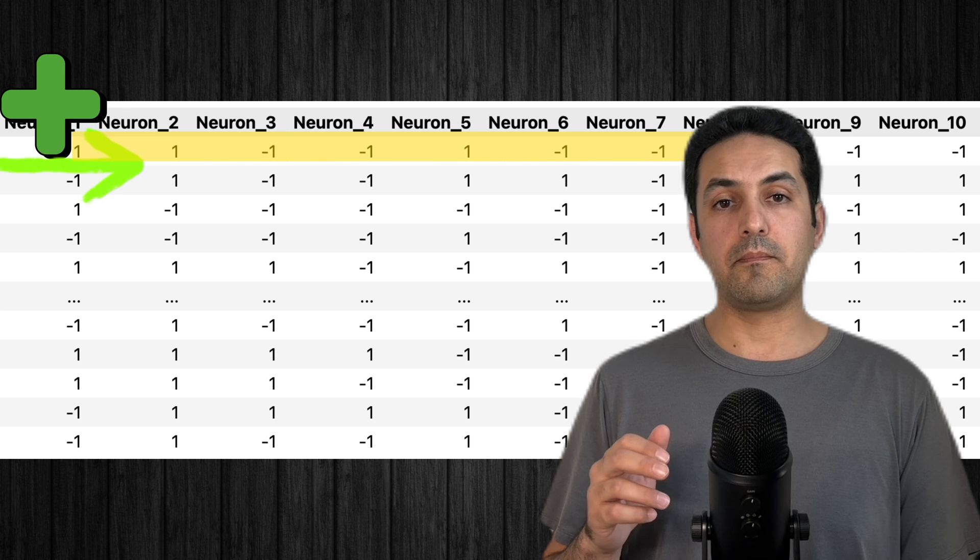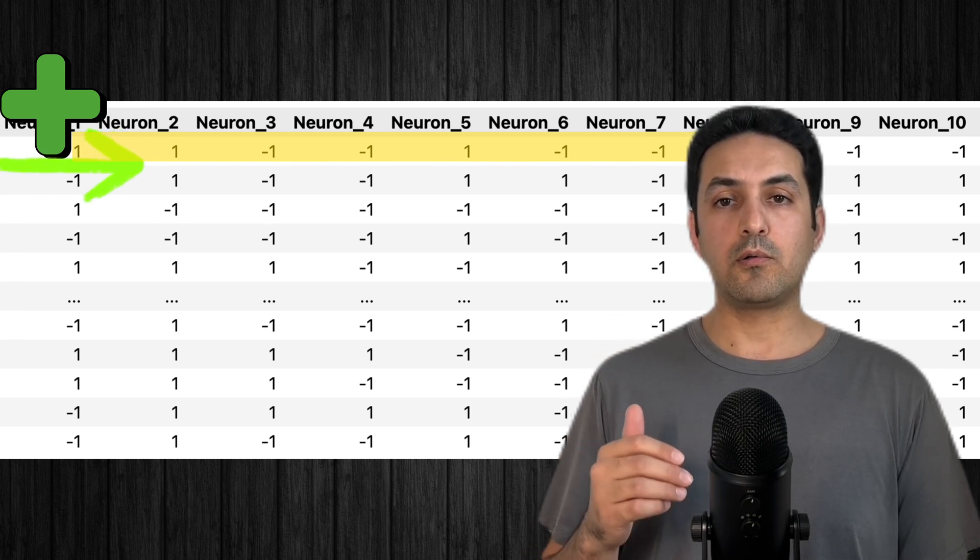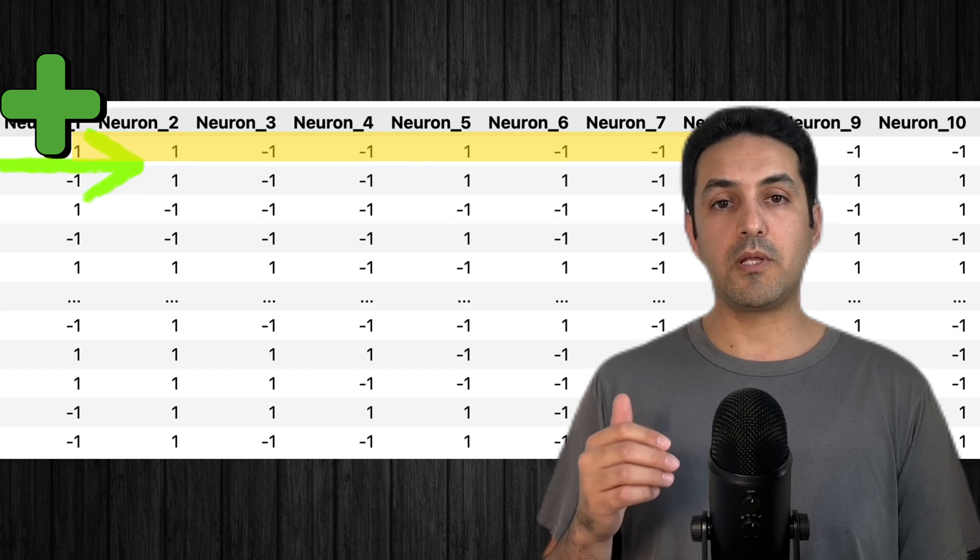But if we see the sum, the magnetization, is significantly above zero, we can conclude that there is a degree of alignment between neurons.